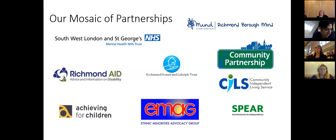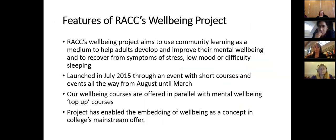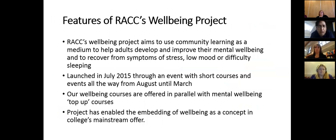Achieving for Children manages adult and community learning in Richmond. RACC's well-being project, like other pilots, uses community learning to help adults develop and improve their mental well-being and recover from symptoms of stress, low mood, or difficulty sleeping — addressing the mild to moderate phase of the mental health spectrum to prevent things getting worse. Delivery started in August to build momentum, with provision continuing from September through to the end of March.